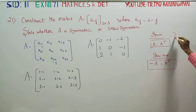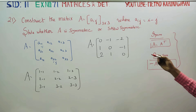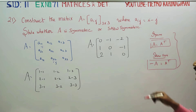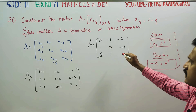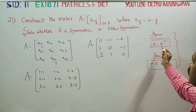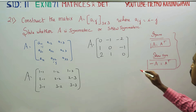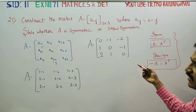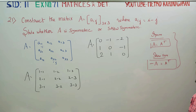It is a general rule: if A transpose is equal to A, that is the case of symmetric. If A transpose is equal to minus A, then it is skew symmetric.